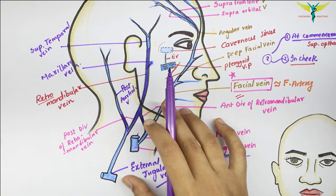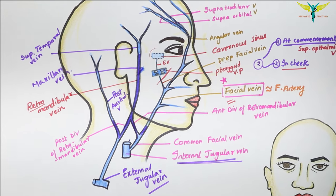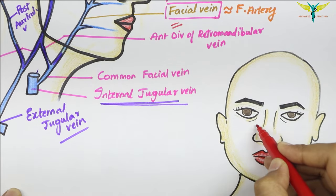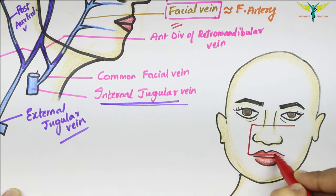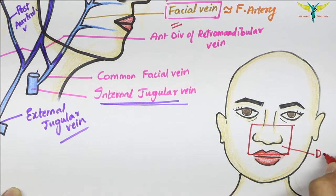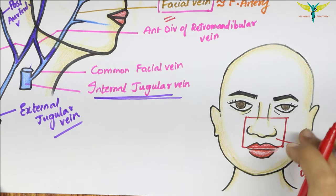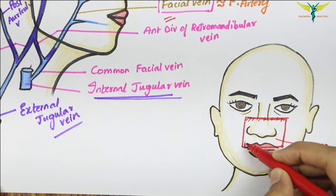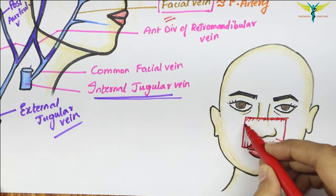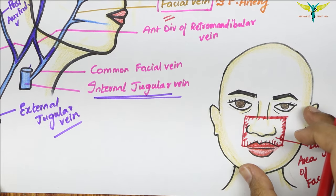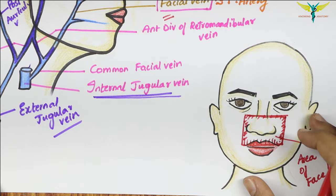Now coming to the most important point: the clinical correlation, which is the dangerous area of the face. This area comprises the lower part of the nose, the upper lip, and the adjoining part of the cheek.